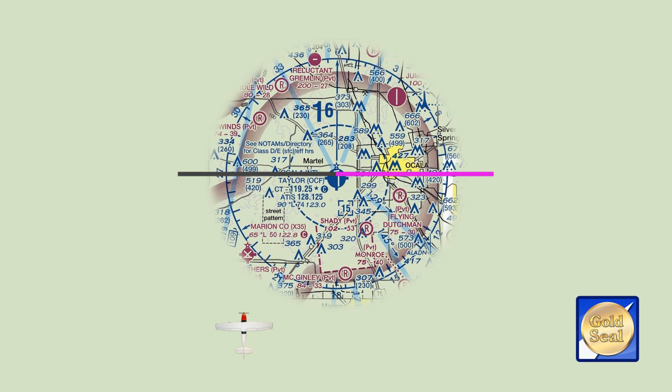So your job is to intercept the 090 radial and fly it outbound. It starts at the VOR, so that's the earliest point that would be acceptable for your intercept. In this situation, with you to the southwest, you could either fly straight to the VOR then turn right to track the 090, or you could fly further east and intercept it past the VOR. Here's how you'd do that.